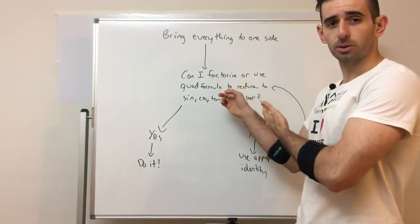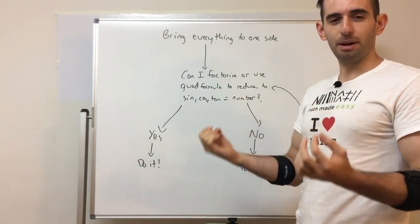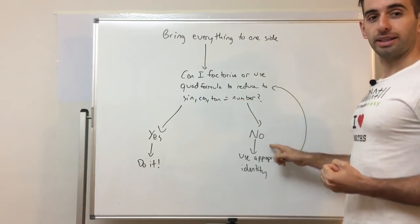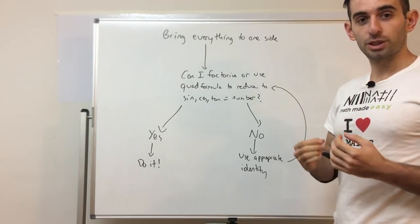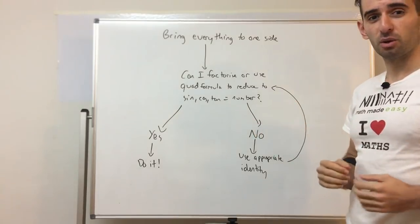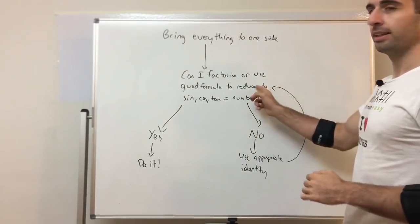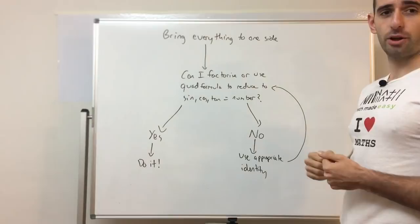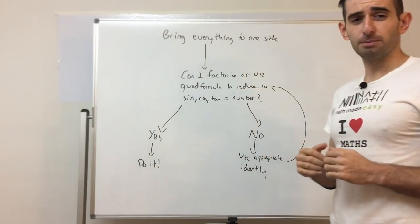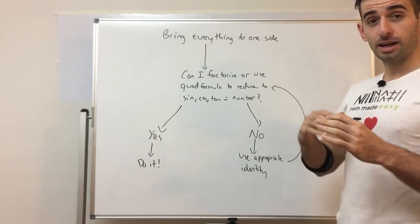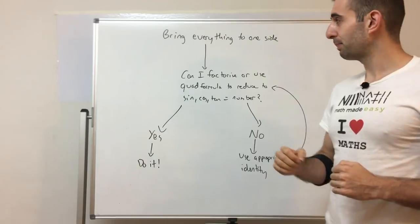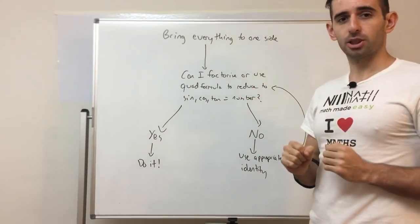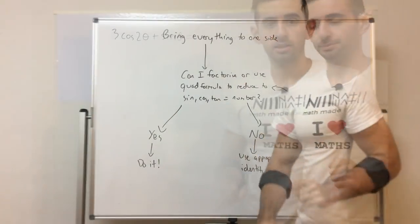If you can factorize or use the quadratic formula, do it — you've reduced it down to a basic trig equation. If you can't, then you'll need to use an appropriate trig identity, in this case a double angle or compound angle. Once you use your appropriate identity, go back and ask: can you now factorize? This flowchart covers most types of harder trig identity equations.